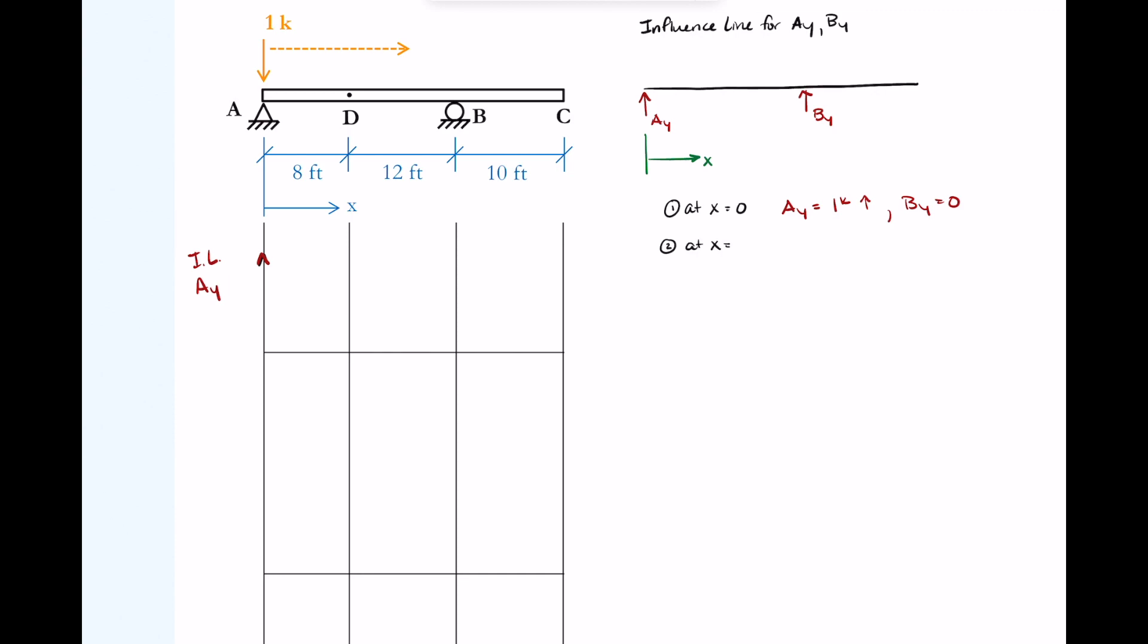We can look at another value at x equals 10 feet, at point D, right in between points A and B. My one kip load has moved over 10 feet. Now I'm going to use equilibrium, just use statics to solve for what the reactions are. I could sum moments about point A to solve B, sum forces in the Y direction to get AY and BY. In this case, it's fairly straightforward because when the one kip is right in the center, half goes to both sides.